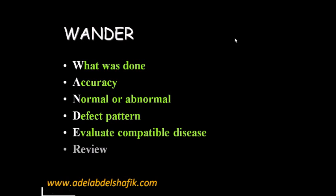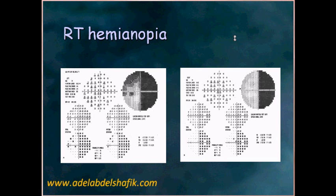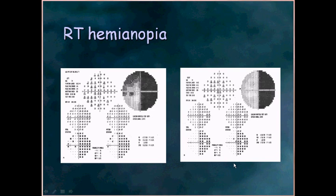Now we come to the pattern of what we see — what goes with any particular disease. For example, here you get affection in this eye. As you can see, it's a real local change. It's not a media opacity compared also to the second eye. This pattern respects the vertical, so it's a neurological defect. It's a hemianopia — we can make this diagnosis.